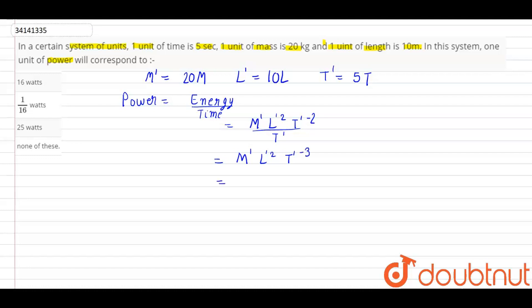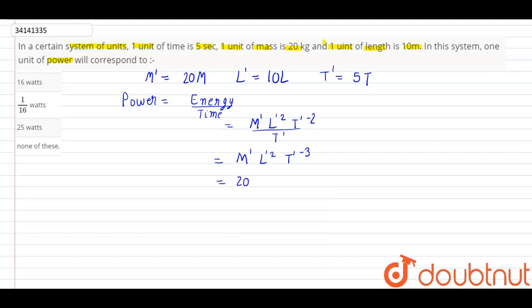As we put the values of m', l', and t': 20m multiplied by 10l whole squared multiplied by 5t to the power minus 3, equals 16 m' l' squared t' to the power minus 3.